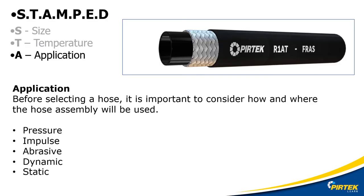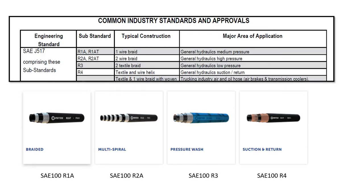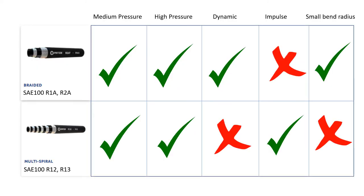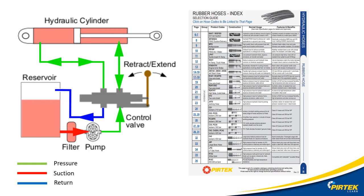STAMPT A is for application — where and how will I be using this hose? Will it be high pressure? Will there be impulses? Is it an abrasive environment? Will the hose be moving or will it be stationary? Will it be subject to extreme temperatures? In my particular application, the R1A or R2A hoses will be fine. I have a medium pressure, it's dynamic, no impulse, and there's a small bend radius. Where on the circuit is this hose being used? Is it a pressure line, a suction line or a return line? All these hoses are slightly different and have different characteristics.